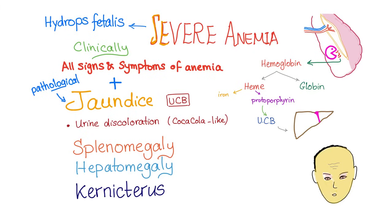Clinically, you can have severe anemia, which can lead to something bad called hydrops fetalis — 'fetalis' means fetus, 'hydro' means water, essentially a fetus full of water. All signs and symptoms of anemia can be present. This is pathological neonatal jaundice, not physiological neonatal jaundice. Pathological jaundice can occur during the first 24 hours. You can also have hepatosplenomegaly and kernicterus.